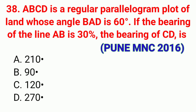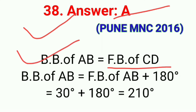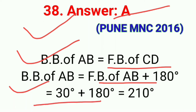Question number thirty-eight: ABCD is a regular parallelogram plot of land whose angle BAD is 60°. If the bearing of line AB is 30°, the bearing of CD is. The correct answer is option A, 210°. Back bearing of AB equals the fore bearing of CD. Back bearing of AB = fore bearing of AB + 180° = 30° + 180° = 210°.